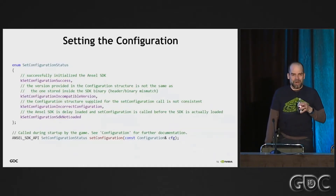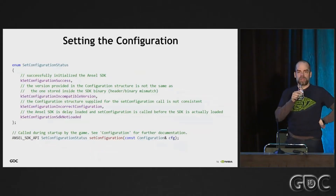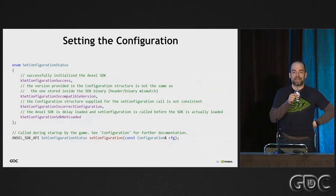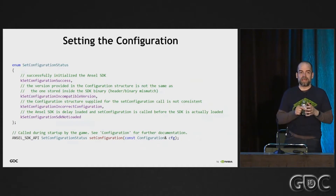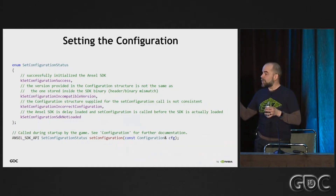So this is code, and I apologize if you're not a programmer. The reason I'm showing you this configuration struct is that you may notice there is no actual runtime error code. There are four configuration statuses that could come out of trying to configure. One is that everything works okay, and that's what you'll see at runtime. The other three are at development time.